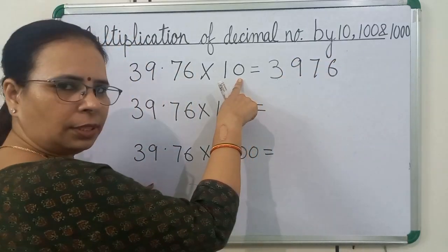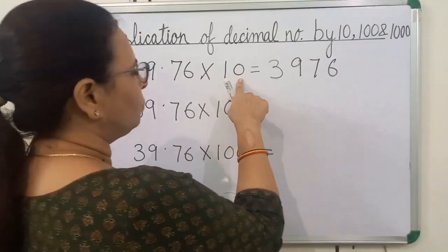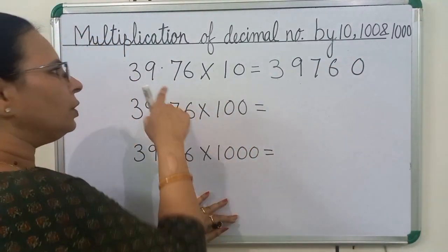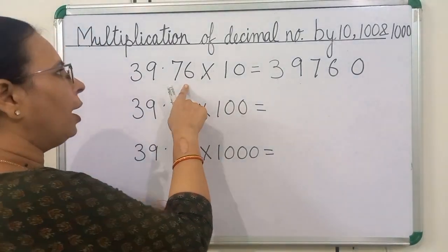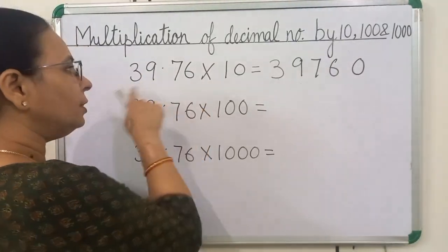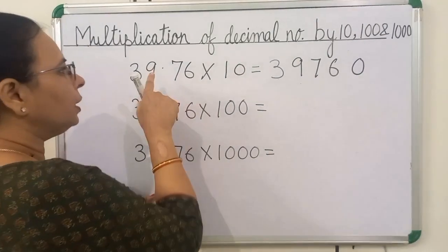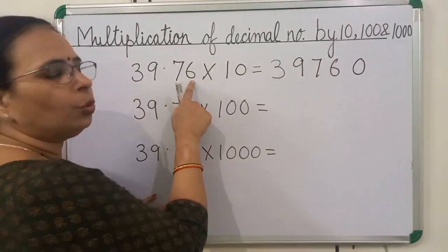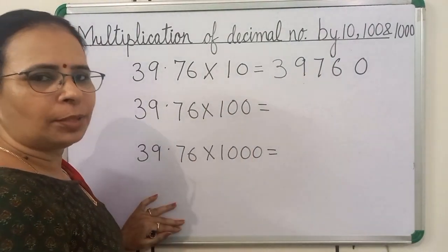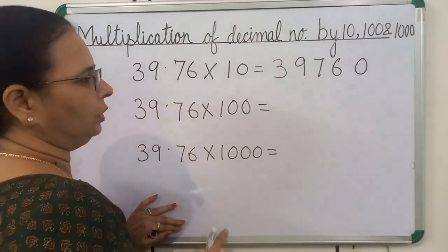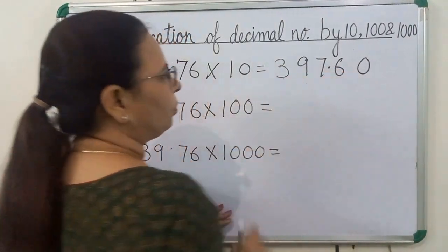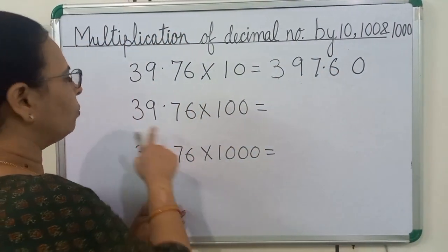Here you can see 10 has 1 zero, so we will write here 1 zero. Now we will focus on the decimal point. You can see in the question, the decimal point is before 2 digits. So in the answer, we will put the decimal point before 2 digits — giving us 397.60.